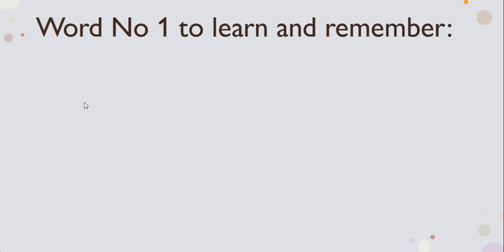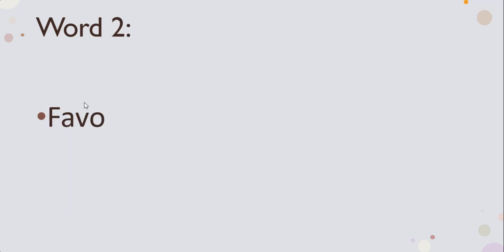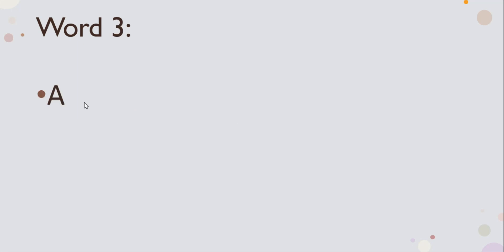The first word you learned and you're going to test is family members — and that's ghar wale. Give yourself one mark if you have spelled it correctly. The second word is favorite — pasandida. Third word is actors — adakar.